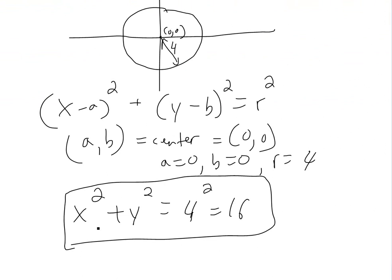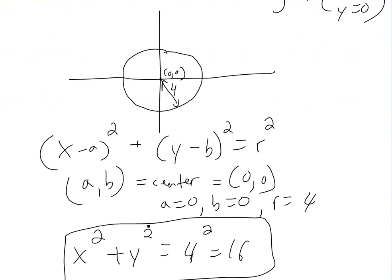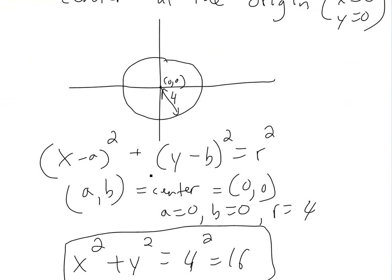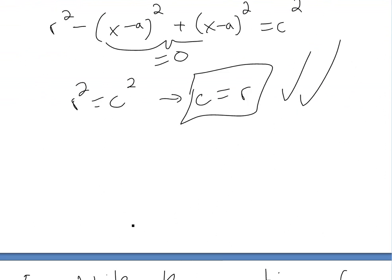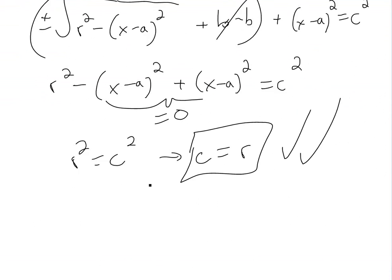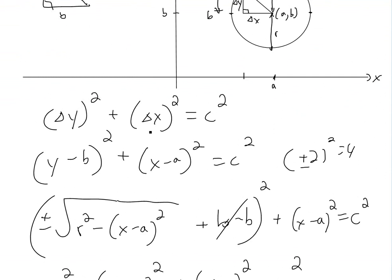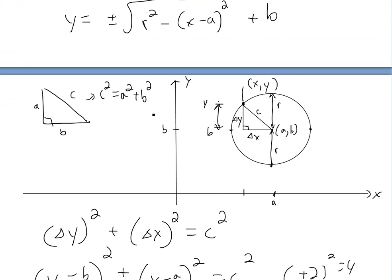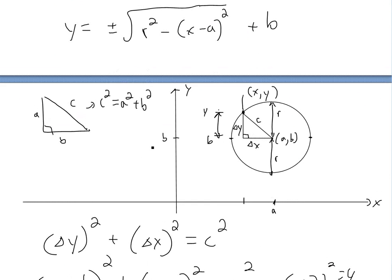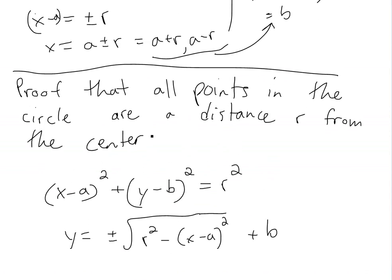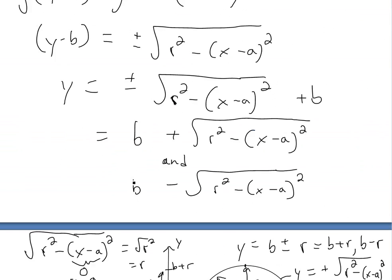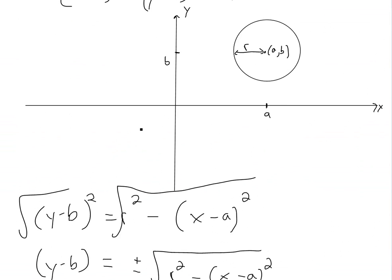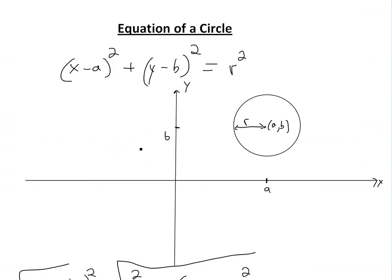This equation actually encompasses two equations — y equals plus or minus square root of whatnot — basically proving that every point in a circle is distance r from the center. Thanks for watching. Hopefully you learned about circles, and stay tuned for another Math Easy Solution. Thank you.